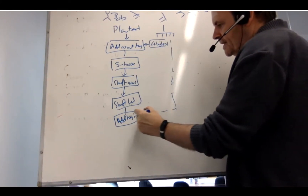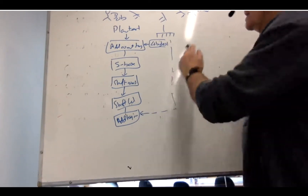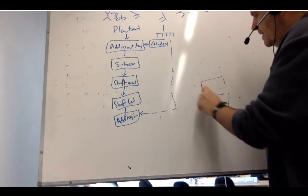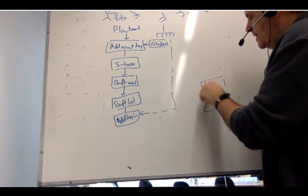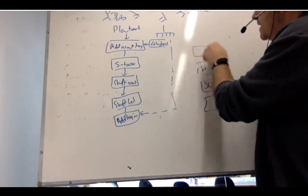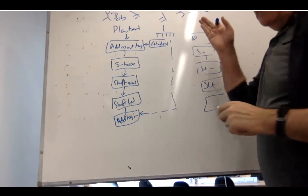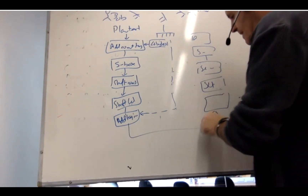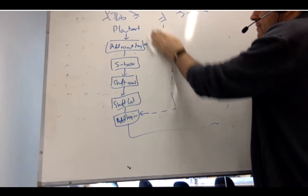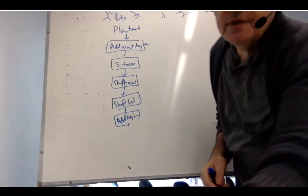At the very end we do an ADD key round again. We take the next four bytes of the key and then we add them in. On the other side we basically just do the opposite of it. As we're coming through we do our ADD key round, we do our shift column in reverse, we do our shift rows in reverse, we do our S box in reverse, and we do an ADD key round. And then we should end up with the plain text at the end. So that's the basic steps that we actually go through to be able to encrypt.